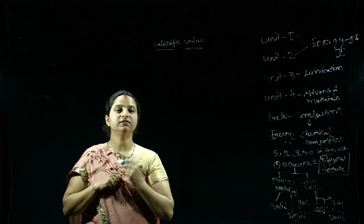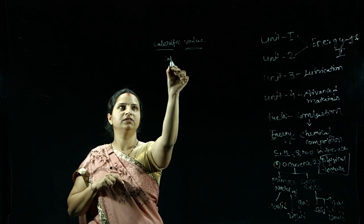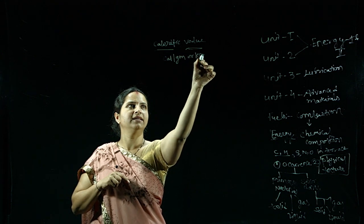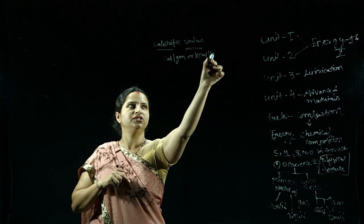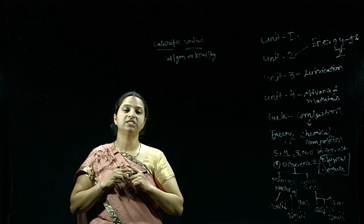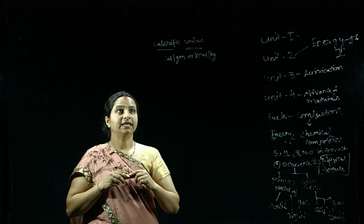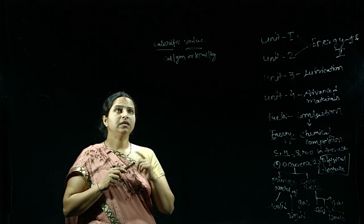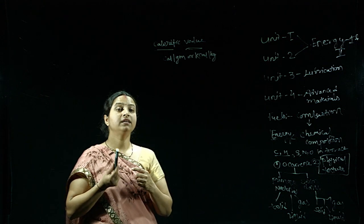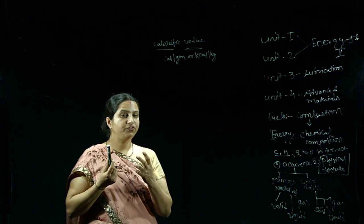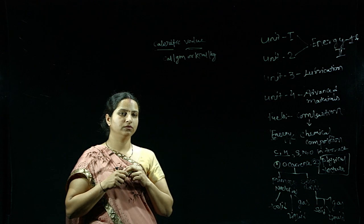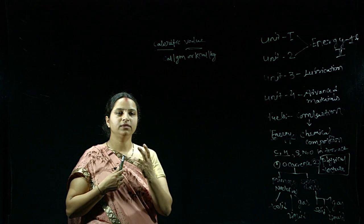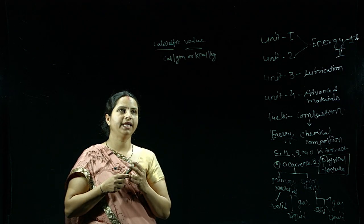The unit of calorific value is calorie per gram or kilocalorie per kg — these are the two units generally used. This is one of the important physico-chemical properties of fuel. A fuel having high calorific value is a very good fuel.